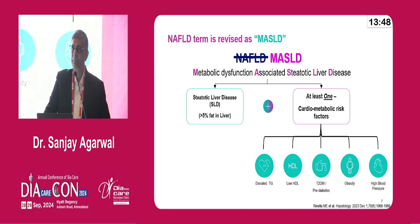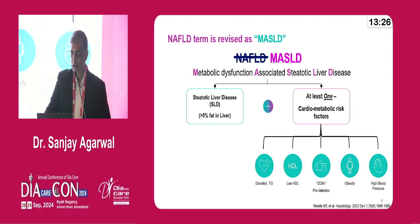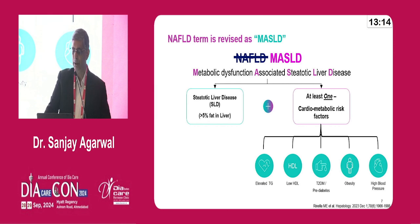The condition is now termed Metabolic Dysfunction Associated Steatotic Liver Disease — MASLD. To qualify, a patient should have more than 5% of hepatocytes laden with fat, which means more than 5% of the liver is steatotic. In addition, the patient should have at least one cardiometabolic risk factor: elevated triglycerides, low HDL, presence of diabetes or prediabetes, obesity, or high blood pressure.